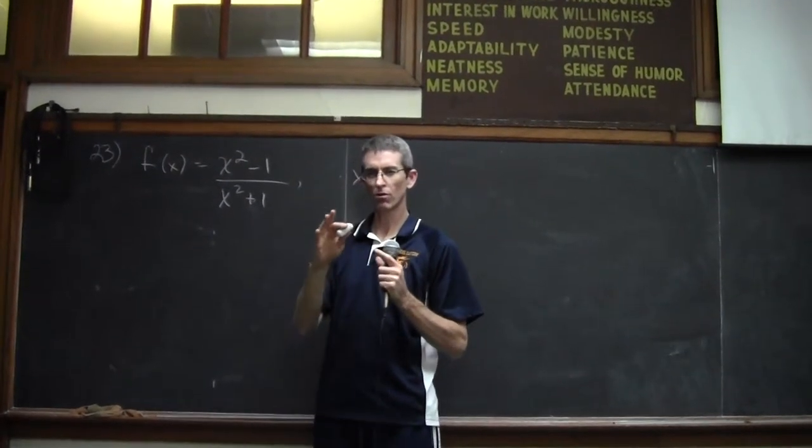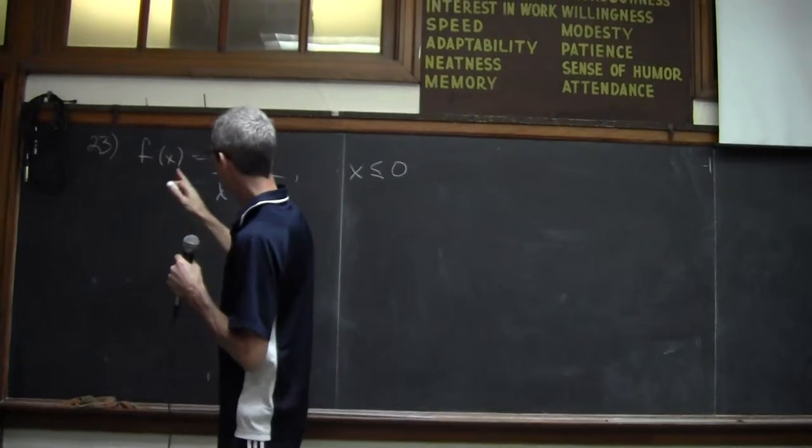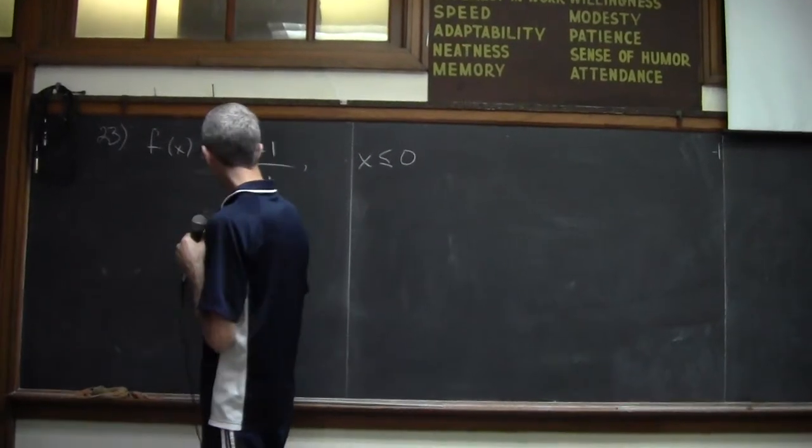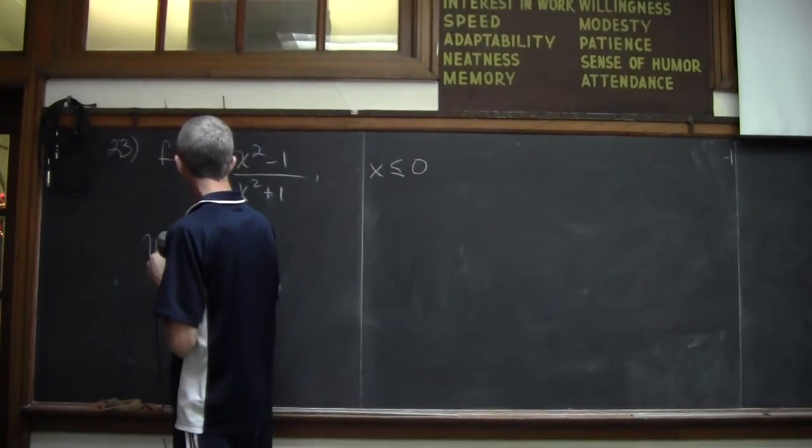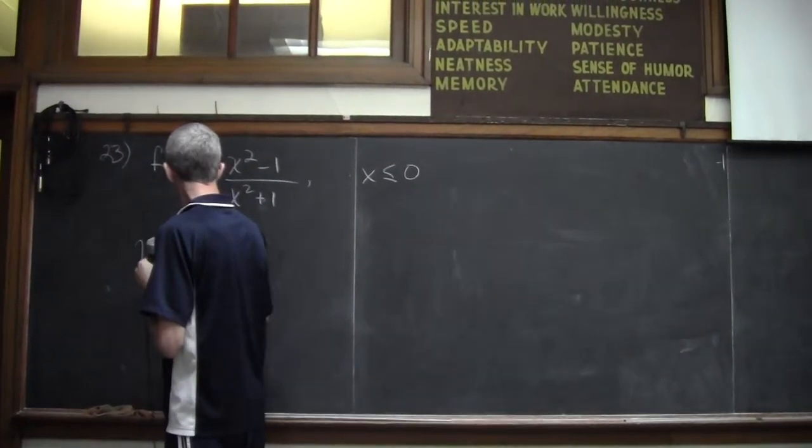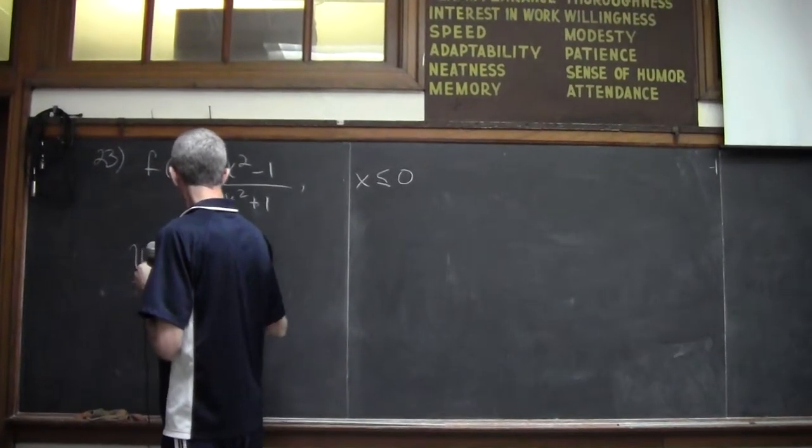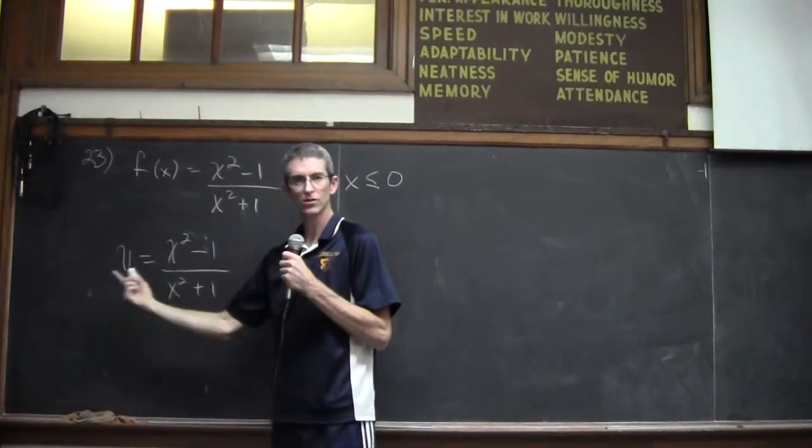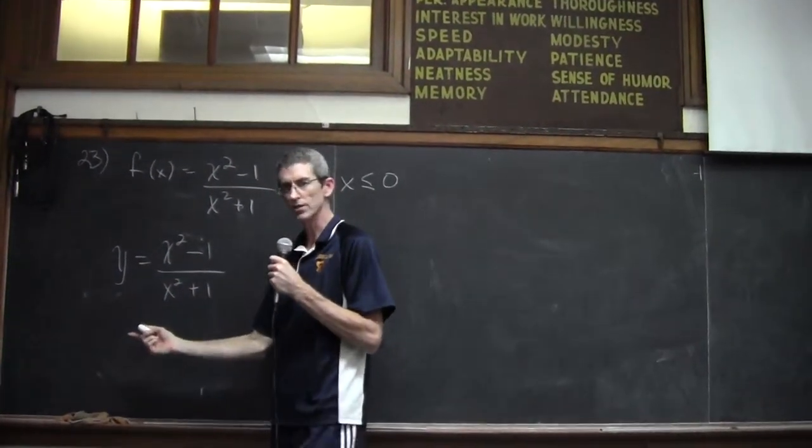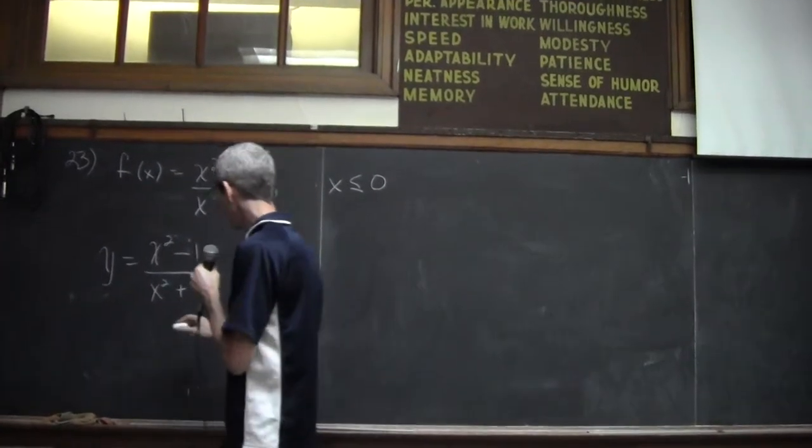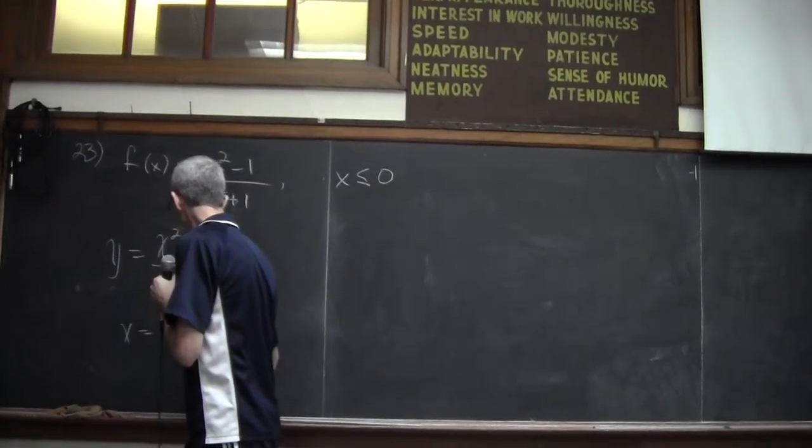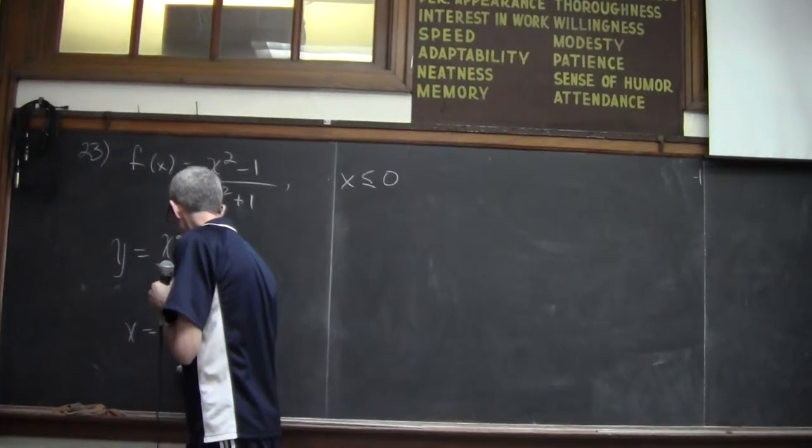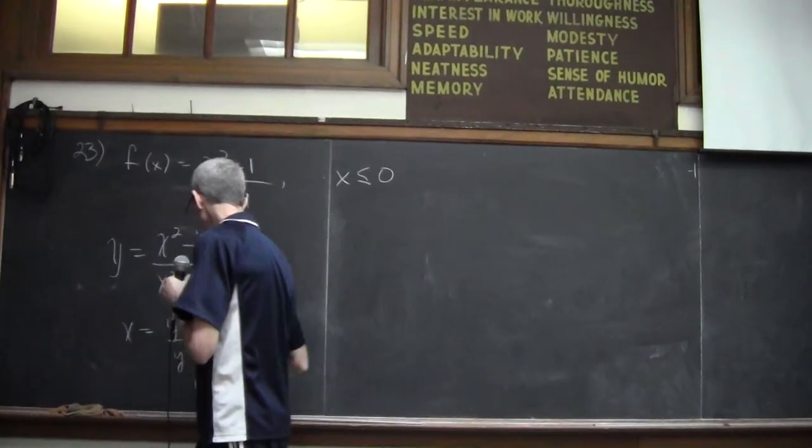When we get to the algebra then we'll kind of go a little slower. So remember the first step is I'm going to rewrite this as y equals. Then the second step is going to interchange all x's with all y's. And you got to get all of your x's. So I'll do that right here. x equals y squared minus 1 over y squared plus 1.